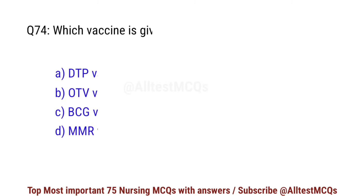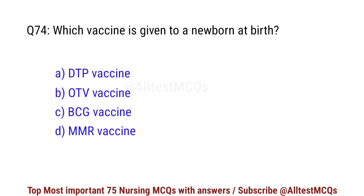Question number 74. Which vaccine is given to a newborn at birth? Correct option is C: BCG vaccine.